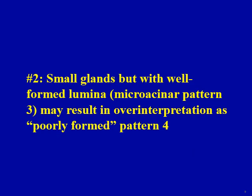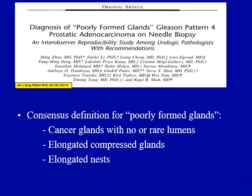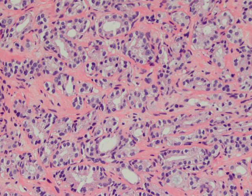The second pitfall is also related to poorly formed gland criteria, but is more related to the definition of poorly formed glands. When you deal with small atrophic glands, there is a tendency to over-interpret them as poorly formed Gleason pattern 4. The consensus definition of poorly formed glands requires no or rare lumens, elongated compressed glands, and elongated nests. An example where glands are small and atrophic but still have well-formed lumina for most glands is considered microacinar Gleason pattern 3, not pattern 4.